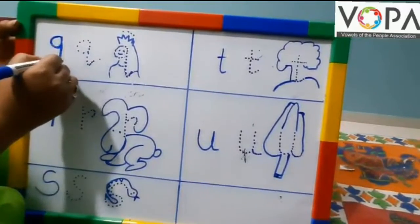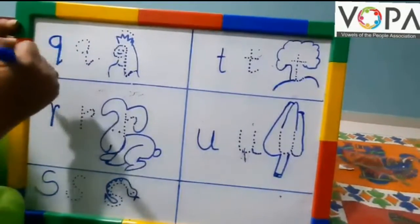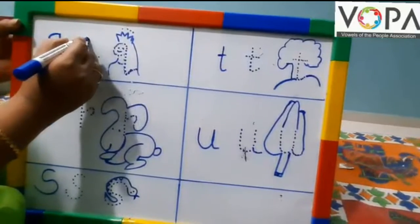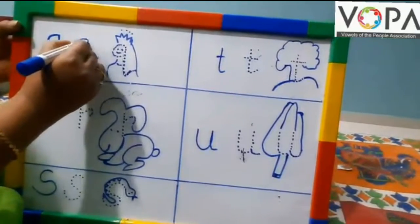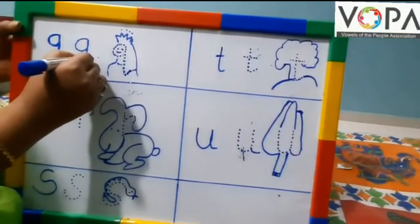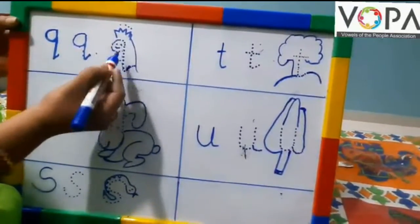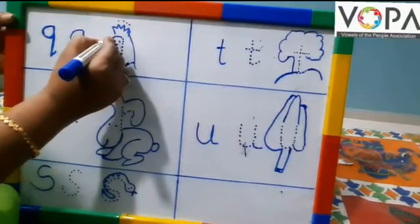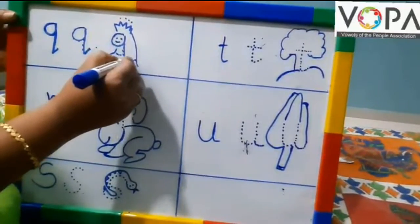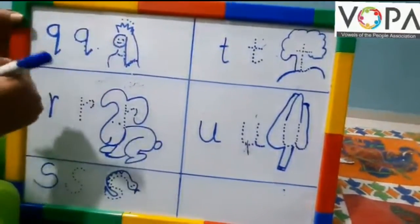Q. Q for Queen. This is how to write letter Q. This is Q. You can also draw Queen with the letter Q and color it.